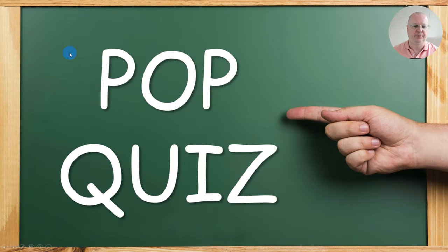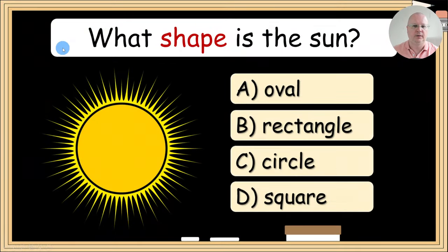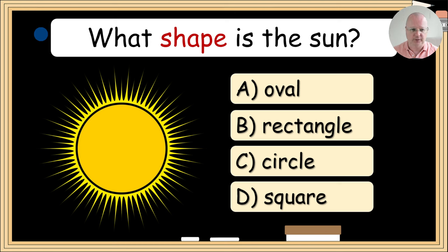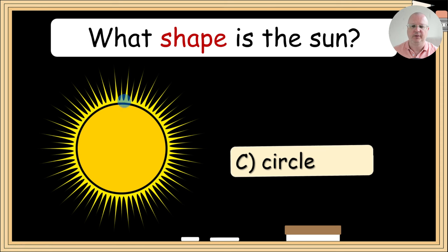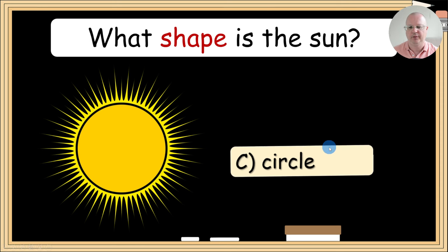Next is the pop quiz. Here you introduce the question and drill the word shape. To do this quiz, you invite a student from each team. If they answer with just a letter — for example, C — they get one point. If they say the actual word, they get two points. This encourages students to say words rather than just letters.